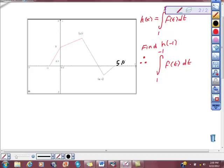This function right here is h of x, and h of x is equal to the definite integral from 1 to x of f of t dt, and we were asked to find h of 2, and now we're being asked to find h of negative 1.